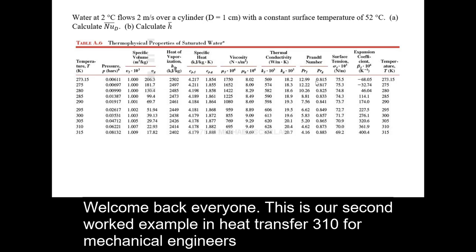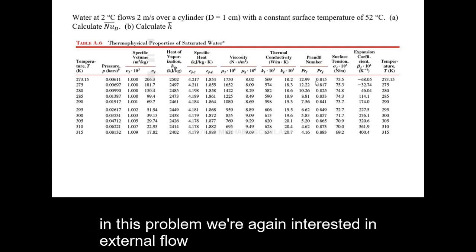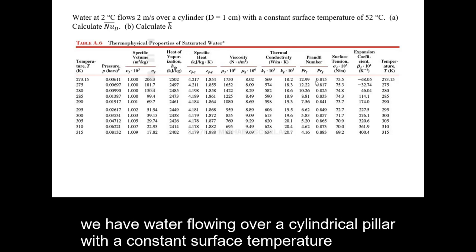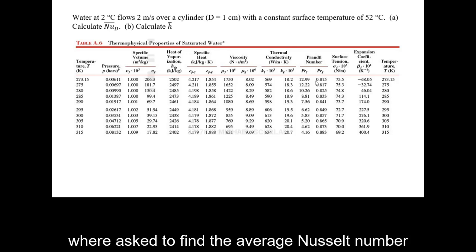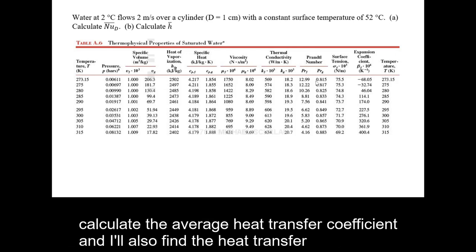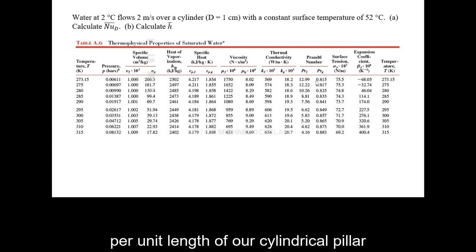Welcome back everyone. This is our second worked example in heat transfer 310 for mechanical engineers. In this problem we're again interested in external flow. We have water flowing over a cylindrical pillar with a constant surface temperature. We're asked to find the average Nusselt number, calculate the average heat transfer coefficient, and also find the heat transfer per unit length of the cylindrical pillar.